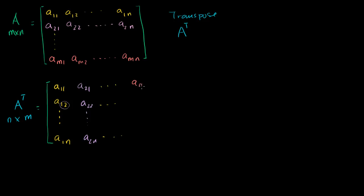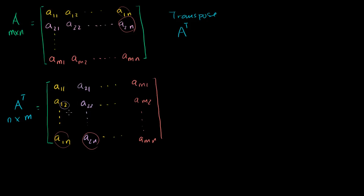The mth column goes a_{m,1}, a_{m,2}, all the way to a_{m,n}. It might be a little confusing with the subscript notation, because we've always said the first number is the row and the second is the column. When you look at the transpose, don't take the subscripts too literally — just keep in mind we're taking all of the rows and turning them into the columns. We'll especially appreciate that once we do some of the proofs involving the transpose.